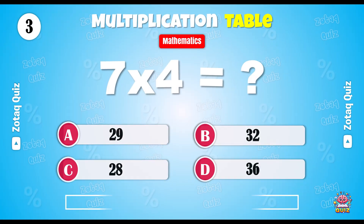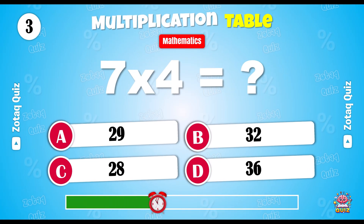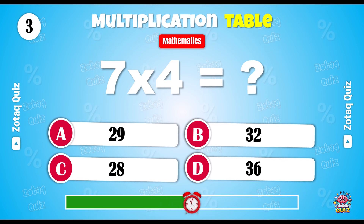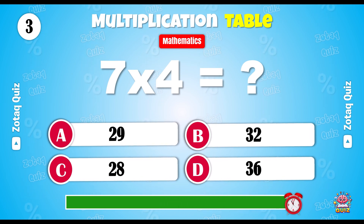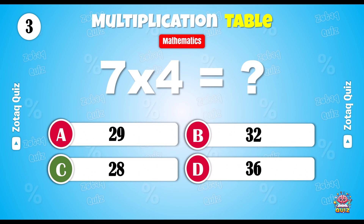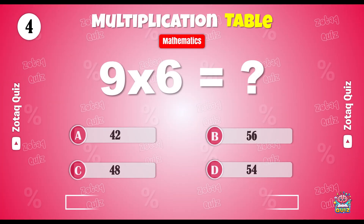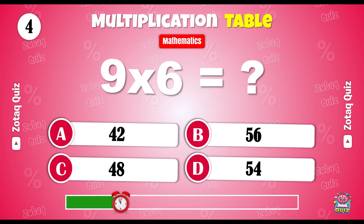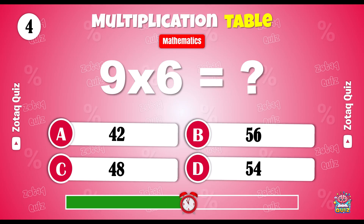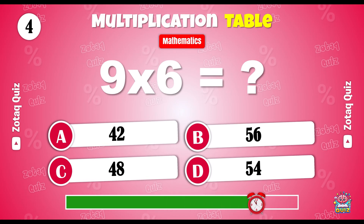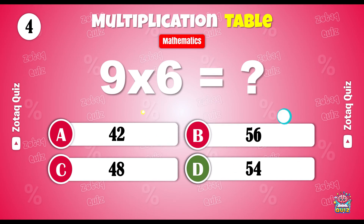Solve this. 7 x 4 is equal to — and the right answer is 28. What do you get when you multiply 9 by 6? 54 is the right answer.